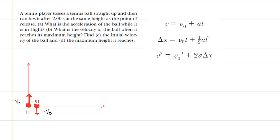It asks us for the acceleration of the ball while it is in flight. Well, of course, once the tennis player releases the ball, the only force acting on that tennis ball is the gravitational force and we all know that the gravitational force exerts an acceleration of negative 9.8 meters per second squared. So that would be the correct answer for part A.